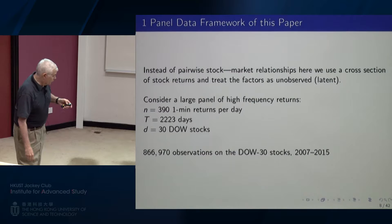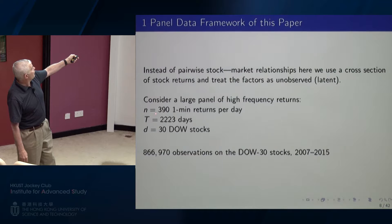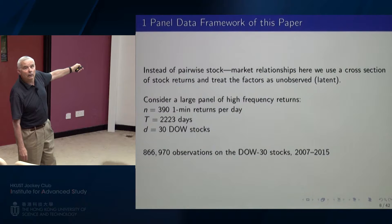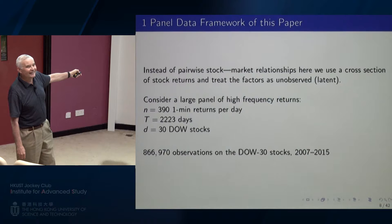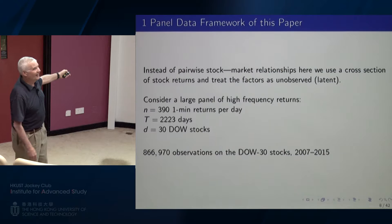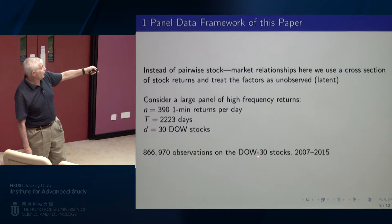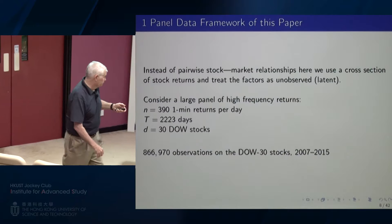I want you to consider a very large panel of high-frequency returns. In our data set, there are 390 one-minute returns per day, 2,223 days, and 30 Dow stocks. In total, we have almost 867,000 observations on the Dow 30 stocks from 2007 to 2015. It's a huge panel.